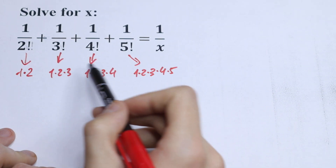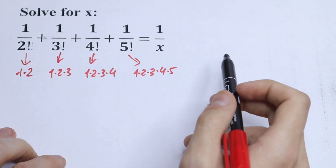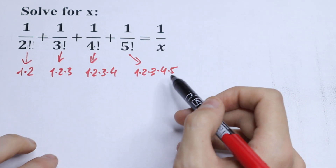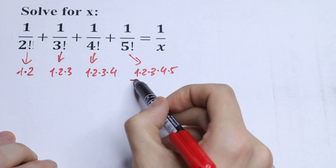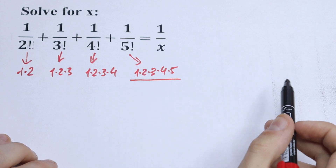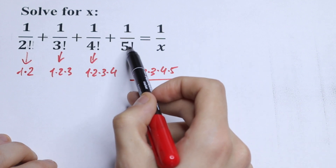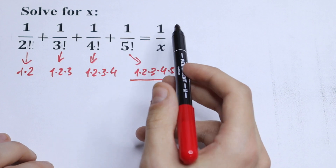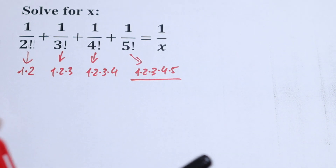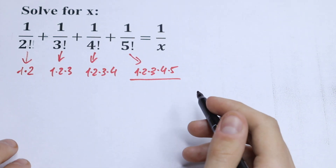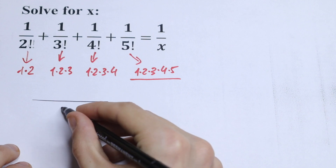Take a look — we can find our common denominator. As you can see, our common denominator will be this product. So the common denominator will be 5 factorial. Let's write our common denominator: 5 factorial.